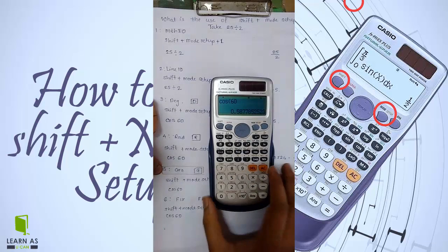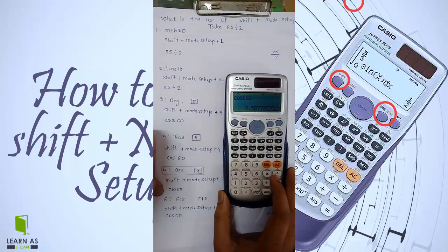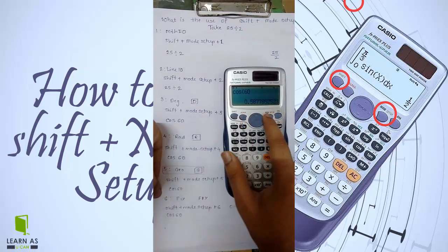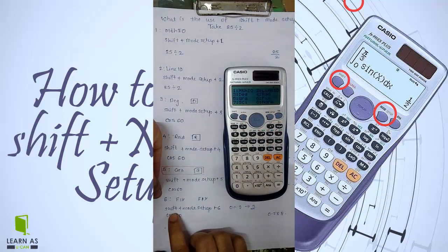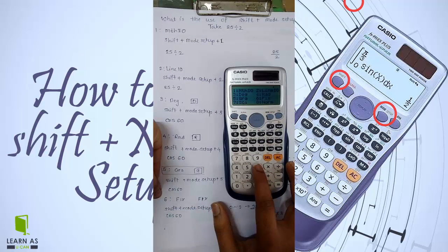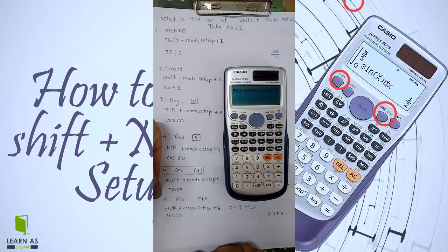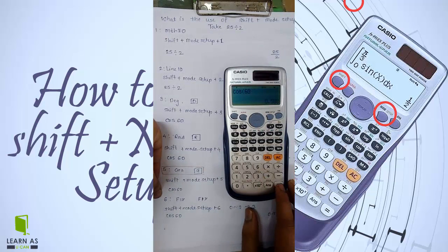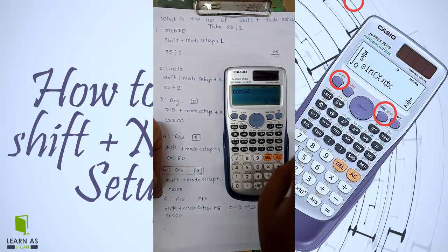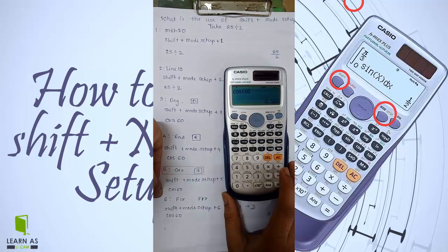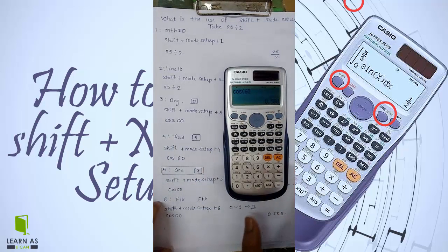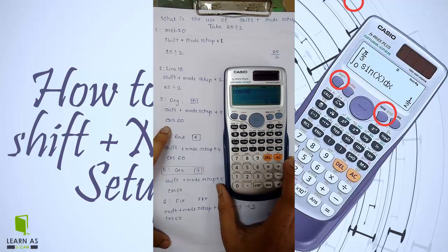Next is FIX. You can select shift plus mode setup plus 6. For example, if I selected 3, then you can see the result only up to three decimal places. That's what the FIX mode does.